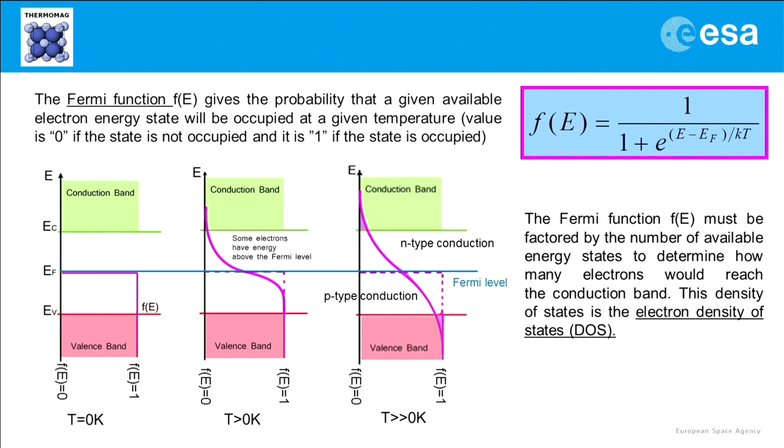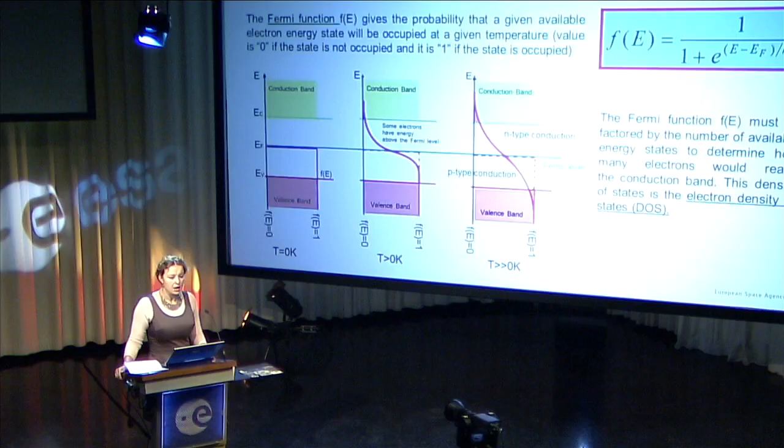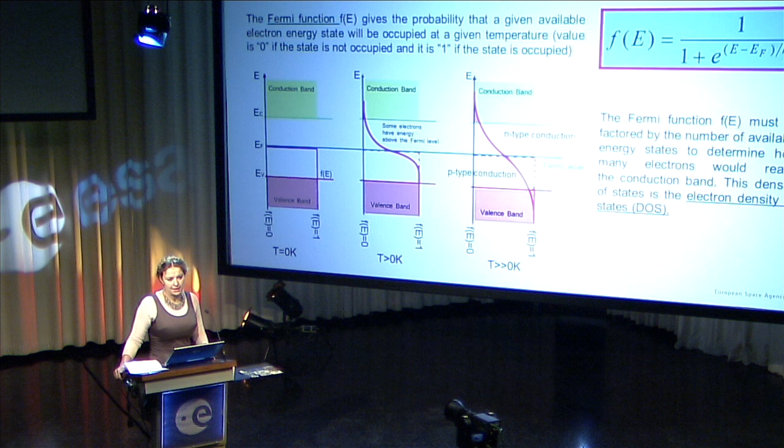This should be numbered by availability of the energy states in the energy range, so-called electron density of states. When we speak of n-type semiconductors, we look at the states above the Fermi level. And when we speak of p-type, it's opposite. The main charge carriers for n-type semiconductors are electrons and for p-type are holes. So the sign of Seebeck coefficient is different for these kinds of materials.